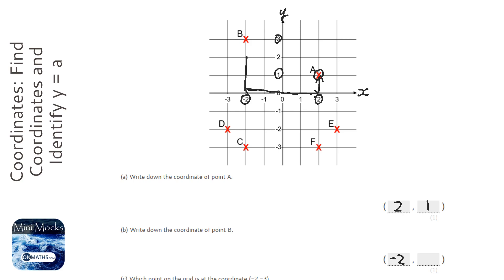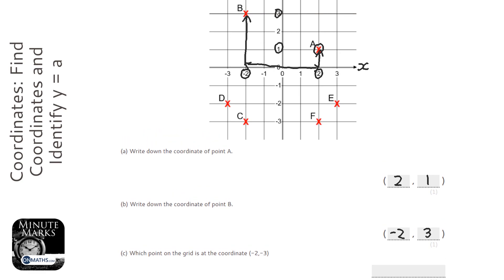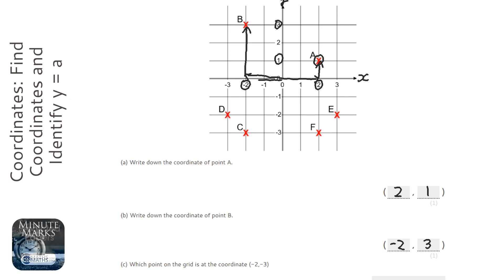It's asked us which coordinate is at the point (-2, -3). So we're going across to -2 again, but this time we're going -3, which means down 3. So it's going to be coordinate C, because C is at (-2, -3).